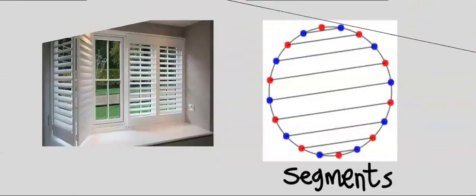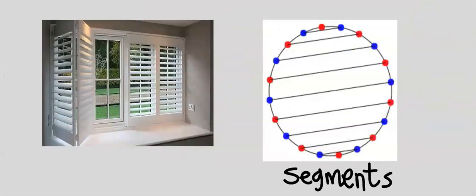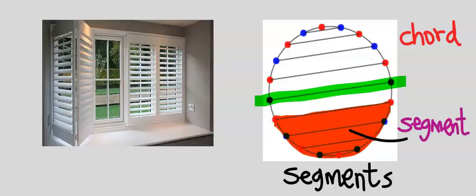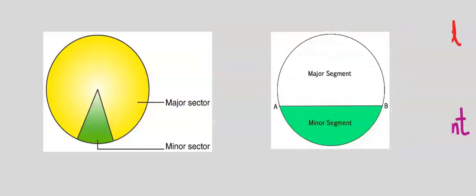A segment splits a circle horizontally like a window blind. A chord is a line within a circle, and the shaded area within the chord is known as a segment. We have the major sector and the minor sector; likewise, we have the major segment and the minor segment.